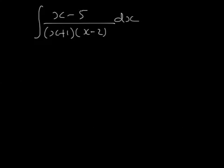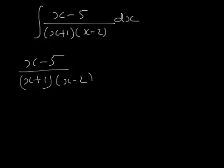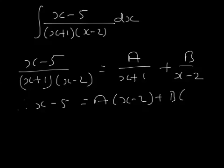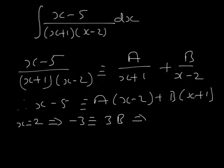Now let's think about integrating this function here. Firstly, we can split this into partial fractions. So x minus 5 over (x plus 1)(x minus 2) is A over x plus 1 plus B over x minus 2. Multiply through by (x plus 1)(x minus 2). x minus 5 is A lots of (x minus 2) plus B lots of (x plus 1). This is an identity, it's true for any value of x. Let's take x equal to 2. So minus 3 is 0 plus 3B, which means B is minus 1.